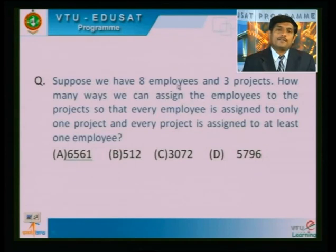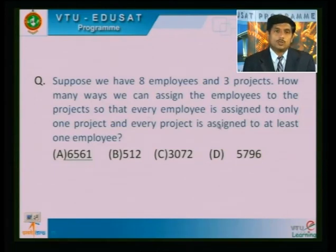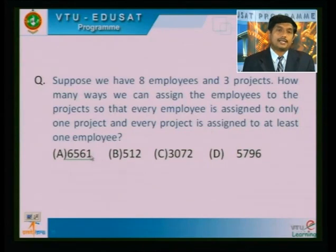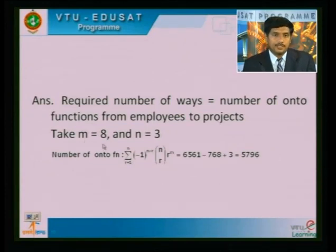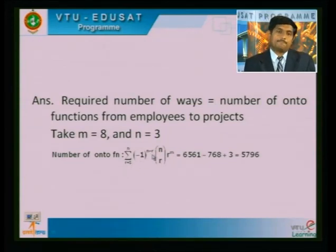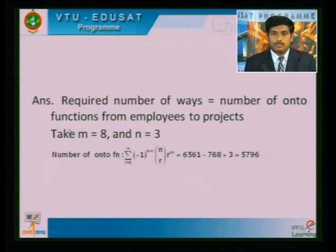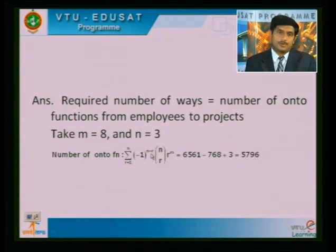There is another problem: suppose we have 8 employees and 3 projects. How many ways can we assign the employees to the projects so that every employee is assigned to only one project and every project has at least one employee? The required number of ways equals the number of onto functions from employees to projects, where m = 8 and n = 3. Using the formula: Σ(r=0 to n) (−1)^(n−r) · C(n,r) · rᵐ = 3⁸ − 3·2⁸ + 3·1⁸ = 5796.